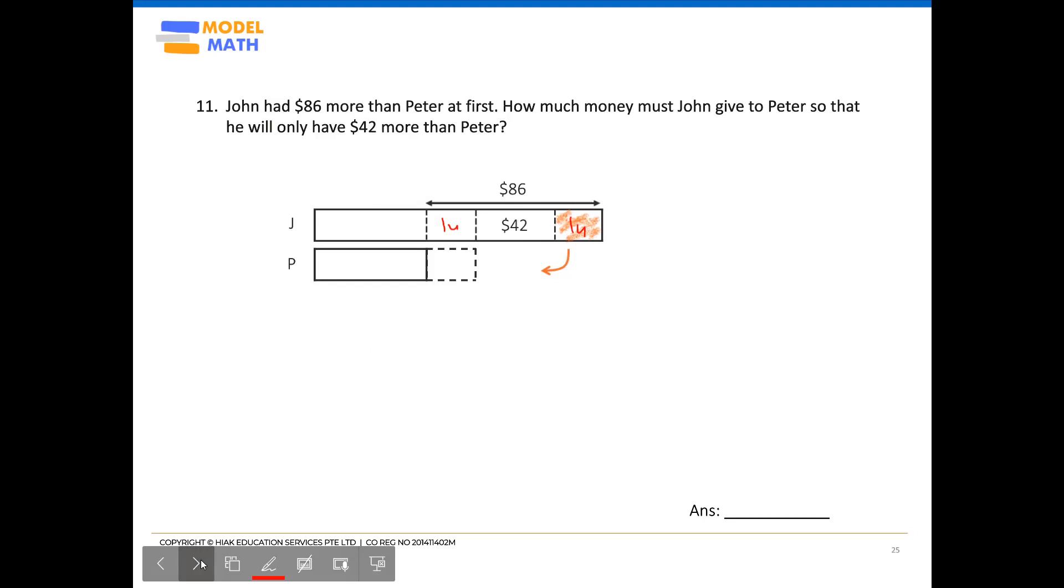So from here, the question is asking how much money must John give to Peter, of which we are trying to solve for this one unit, as seen in the model, which is also shaded.